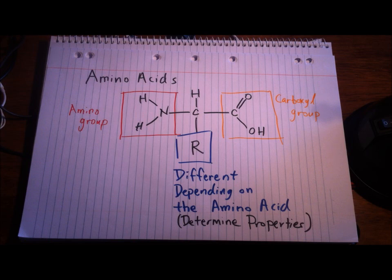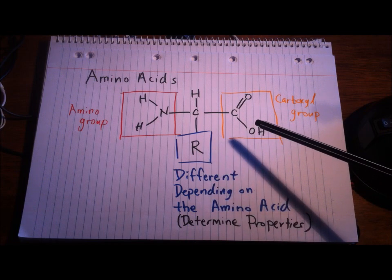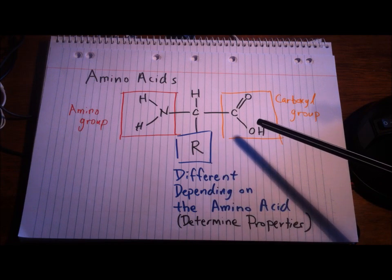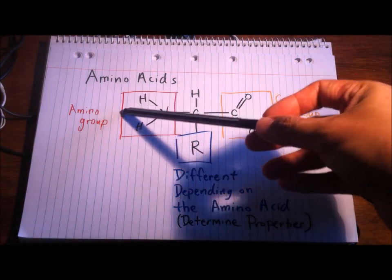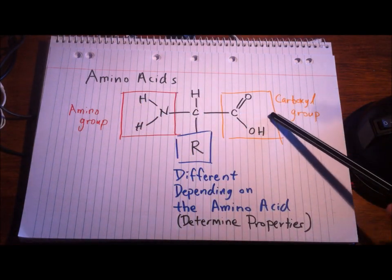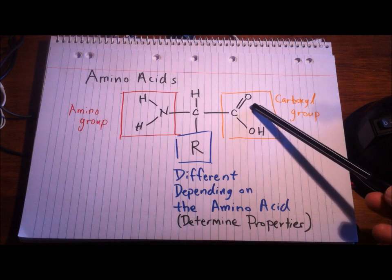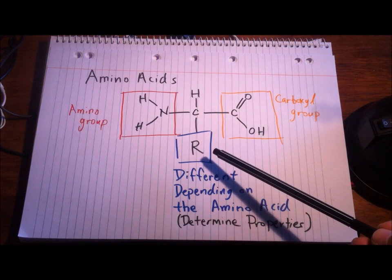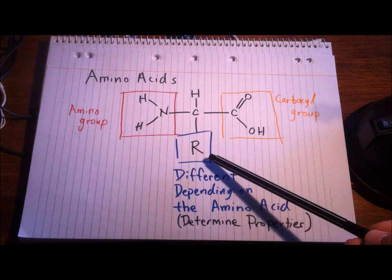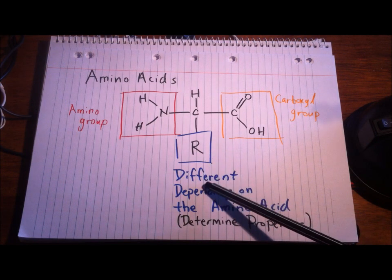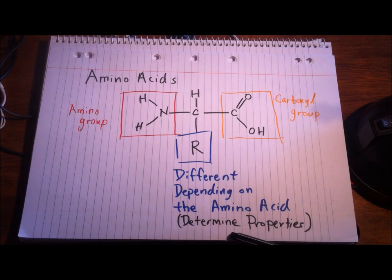Amino acids are the essential building blocks for proteins in our body. Every single amino acid consists of an amino group and a carboxyl group, but they each have different R groups, and that's what determines their properties.